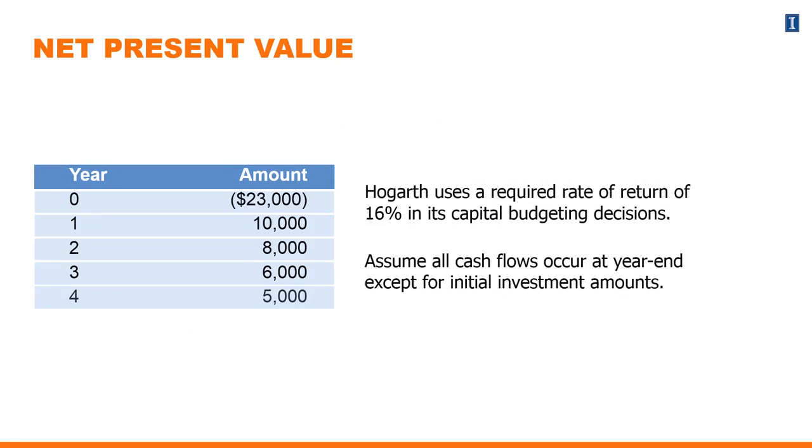Adding to this example, we'll talk about Hogarth using a required rate of return of 16% in its capital budgeting decisions. Upper management has decided that is the legitimate threshold to make investments worthwhile, influenced by a variety of factors. We'll assume that all cash flows occur at the end of the year, except for the initial investment amounts. In that case, the $23,000 is expended immediately.